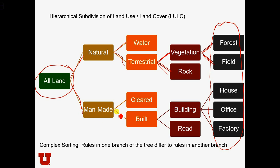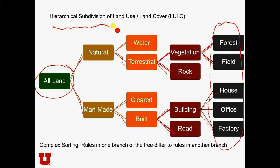If the land is man-made, we can classify it by whether it is cleared land or built land. If there is a man-made structure, it can either be buildings or roads. Buildings can have different types: houses, offices, factories, and so on. The key thing to see is that we are starting on the left-hand side with all land and classifying it sequentially, making our classification system more and more specific as we move from left to right.